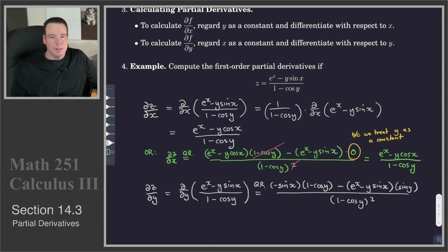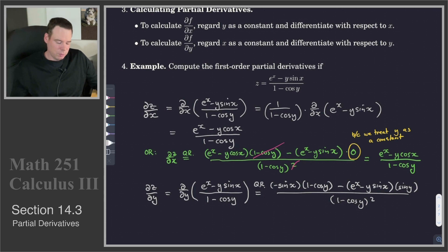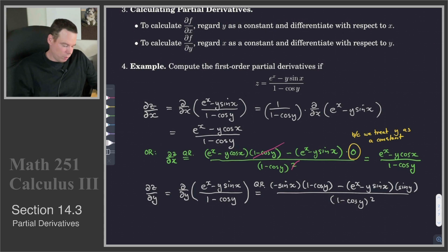So there we've computed the two partial derivatives of this function. The idea is: to compute a partial derivative, pick the variable you want to differentiate with respect to, treat the other variable as a constant, and differentiate as you normally would from Calculus 1.